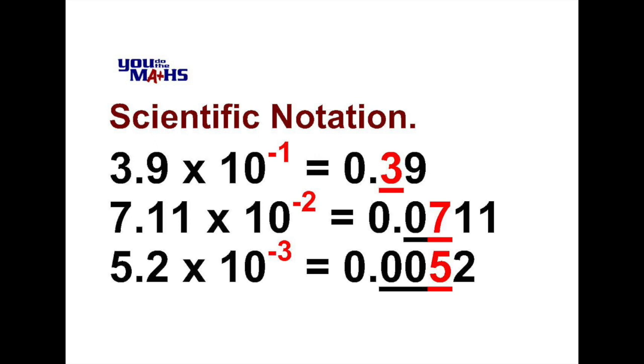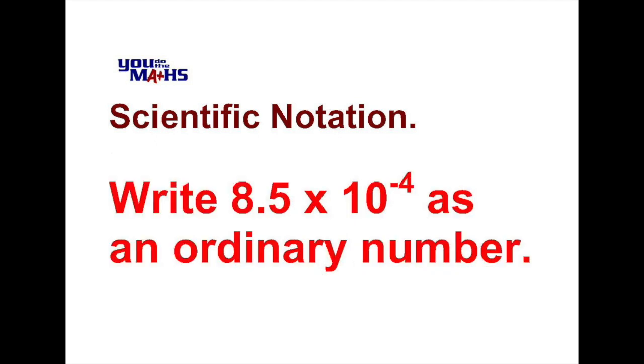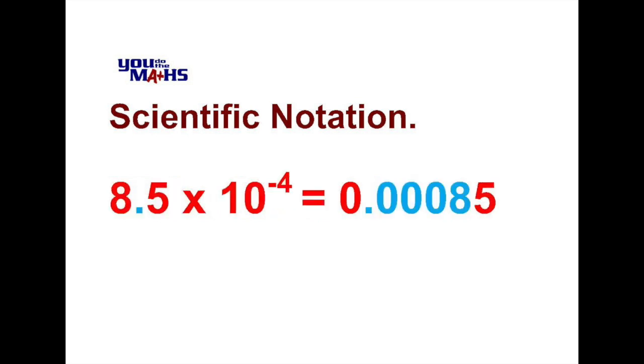Let's try this same process with another example. In this case 8.5 times 10 to the negative 4. To express this as an ordinary number we're going to put the 8, the first non-zero number, in the fourth decimal place position. So our answer becomes 0.00085.